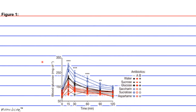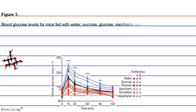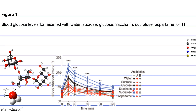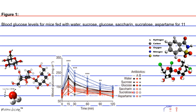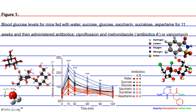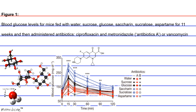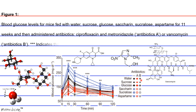Figure 1: Blood glucose levels for mice fed with water, sucrose, glucose, saccharin, sucralose, or aspartame for 11 weeks, and then administered Antibiotics A — which includes ciprofloxacin and metronidazole — or Antibiotics B: vancomycin. The triple asterisk indicates that blue lines are significantly different from others.